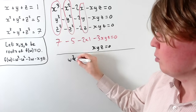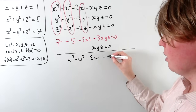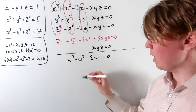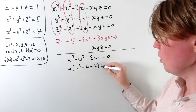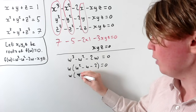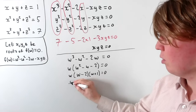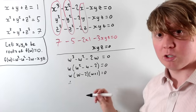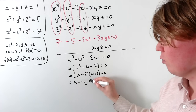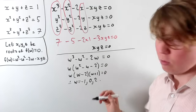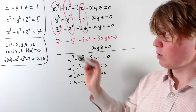Our cubic equation is w³ − w² − 2w = 0. We can factor out a w to get w(w² − w − 2) = 0, and then factorise the quadratic as w(w − 2)(w + 1) = 0. So the three roots are w = 0, w = 2, and w = −1. These are the roots x, y, and z of the original system.